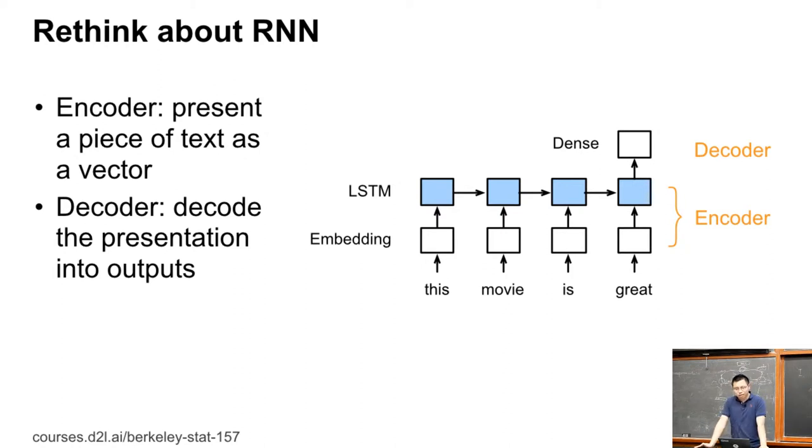That is, given a sentence, we put it into an embedding layer, put it into an RNN layer, then we represent it as a vector, which is this part can be seen as an encoder. We represent the whole sequence into a vector which contains the sequential information in this sentence.